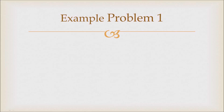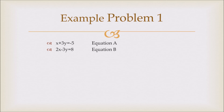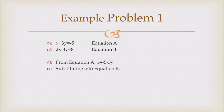Here's an example problem. The first equation is x + 3y = -5, and the second is 2x - 3y = 8. Feel free to pause the video whenever you want. So what I did was I isolated x from equation A and got x = -5 - 3y, and I substituted this value into equation B. So 2(-5 - 3y) = 8, and therefore y = -2.